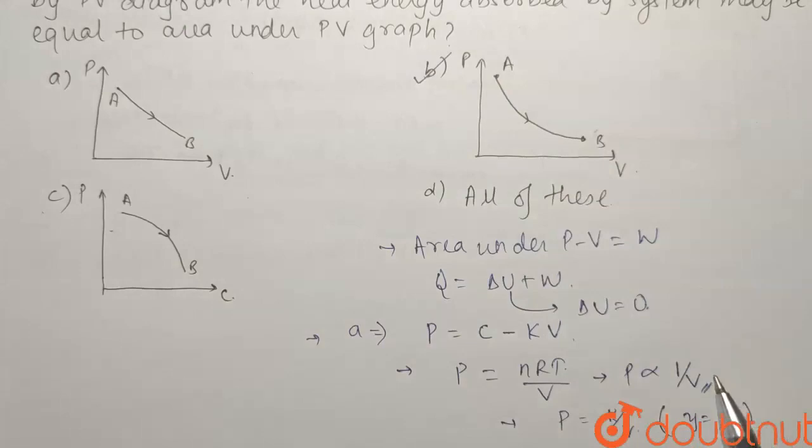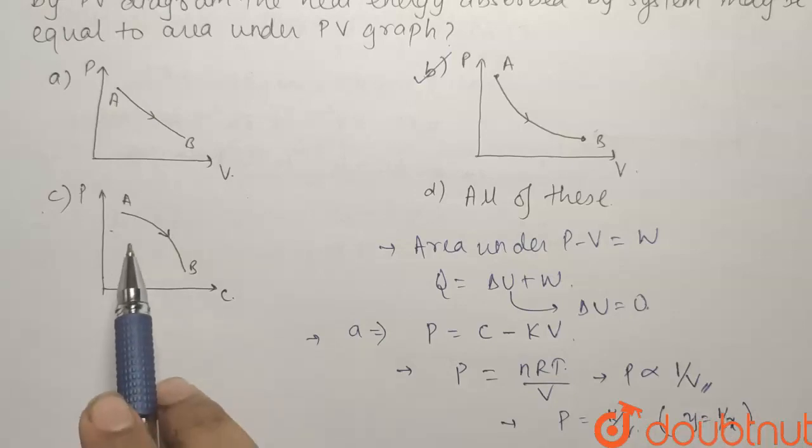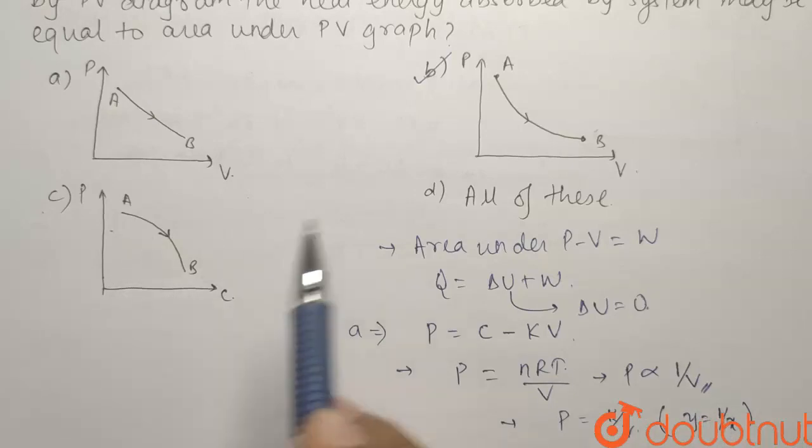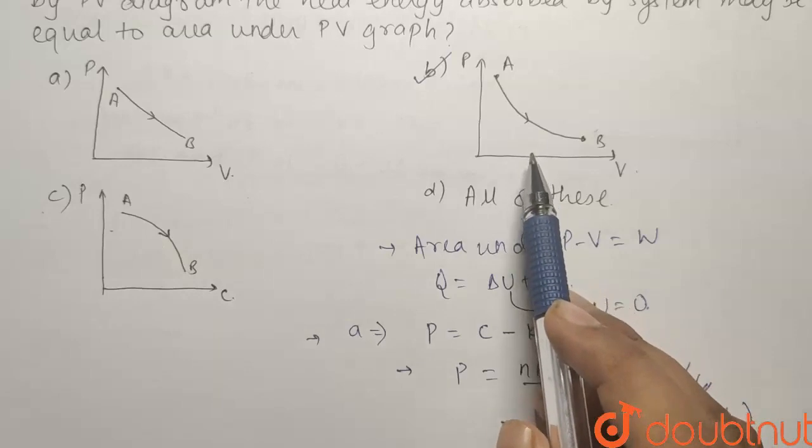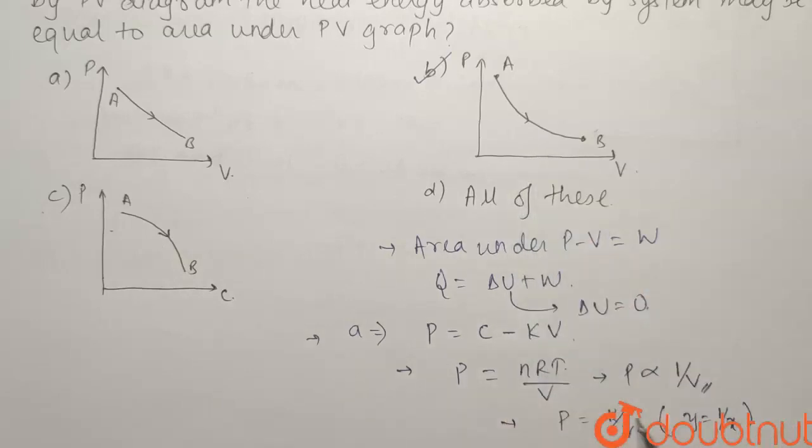Why? Because in this case the temperature is going to remain constant. But for option C, we cannot say that the pressure is inversely proportional to volume because it has a concave downwards curve whereas this was having a concave upwards curve. A minus sign should have been there and if this becomes minus then this curve will come.